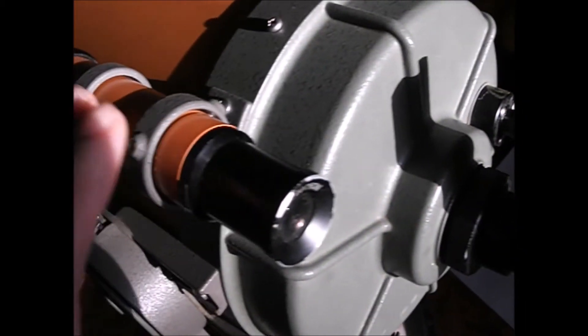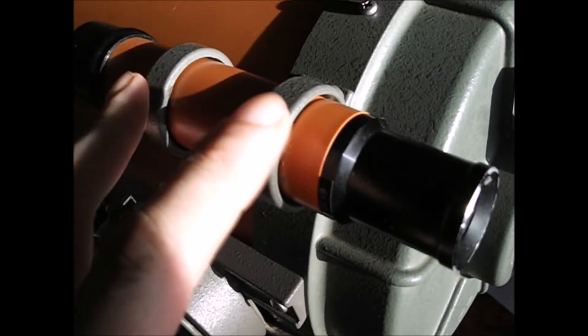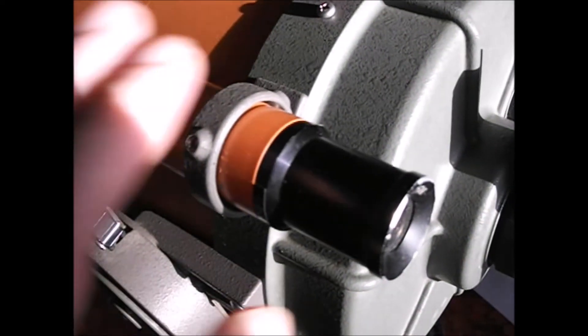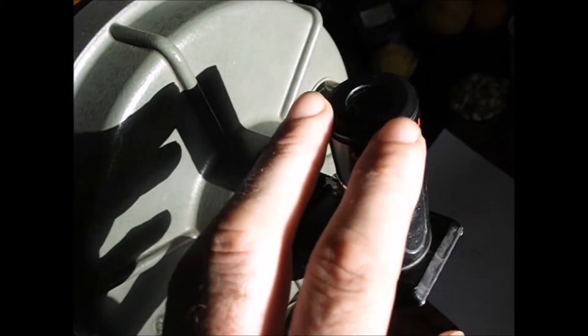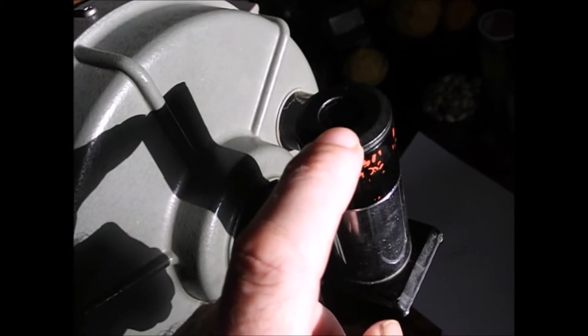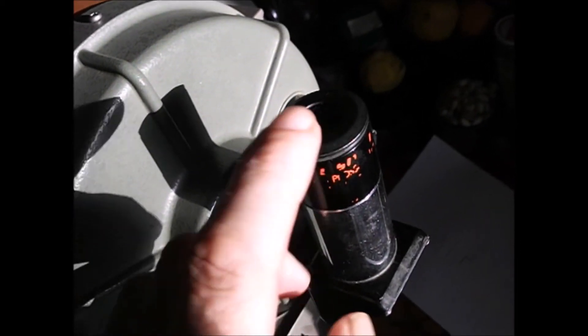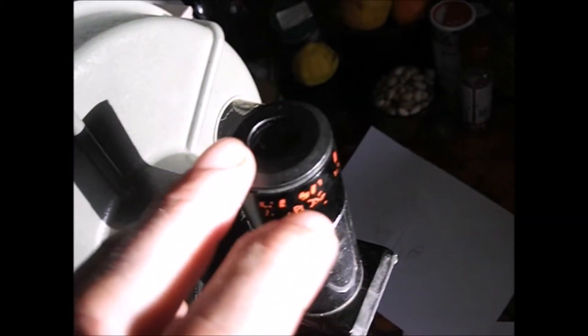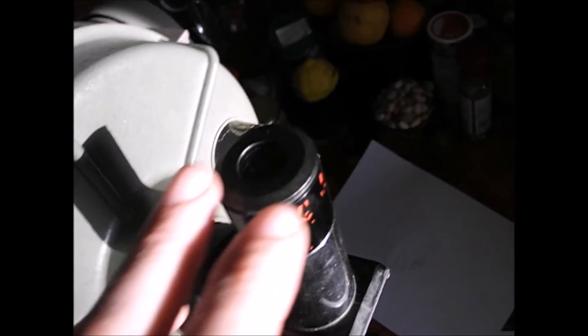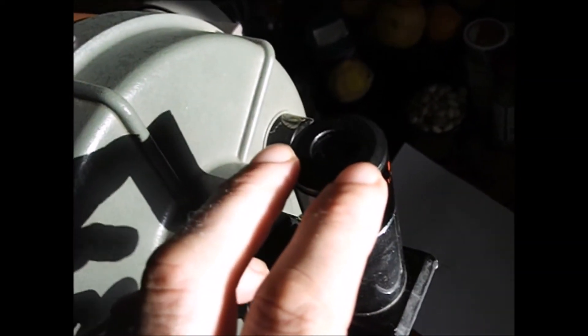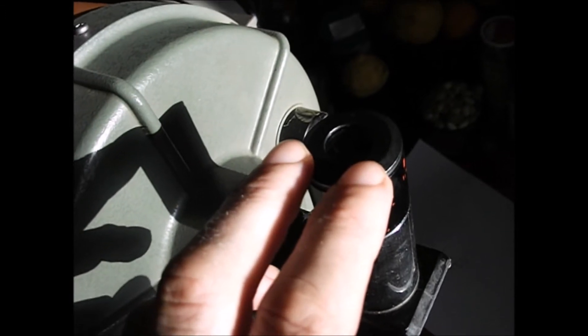But on every cycle when you make an adjustment on the finder scope, because you're using a screwdriver and you may knock the whole telescope, just double-check your reference point in the eyepiece. And in this case it's the antenna on the center skyscraper. So just make sure every time you make an adjustment on the finder scope, you come back to the eyepiece on the main telescope and make sure your reference point is central.